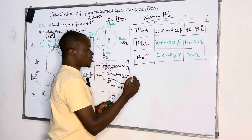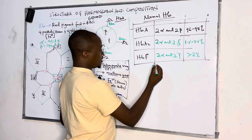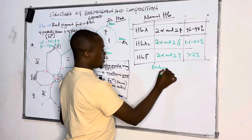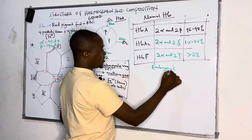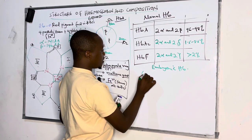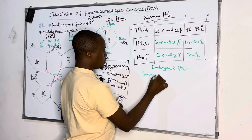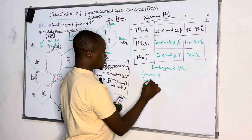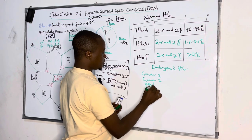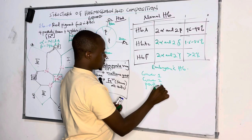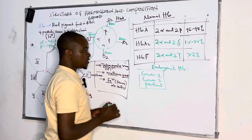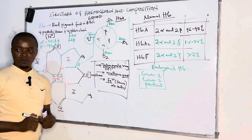We also have embryonic hemoglobin. We shall see them later — embryonic hemoglobins include Gower 1, Gower 2, and Portland. These are other normal hemoglobins found in the embryo.